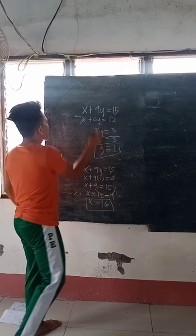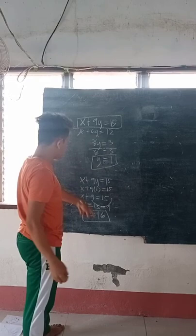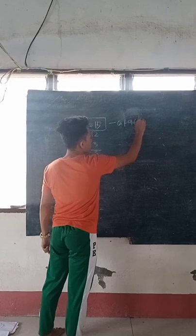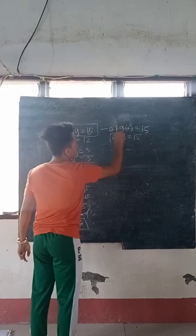Now let's check if our solution is correct. Using the first equation, x plus 9y is equal to 15. Our x is 6 and our y is 1, so 6 plus 9 times 1 is 9, which gives us 6 plus 9 equals 15. This is correct.